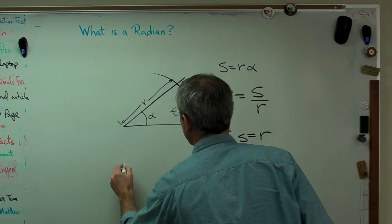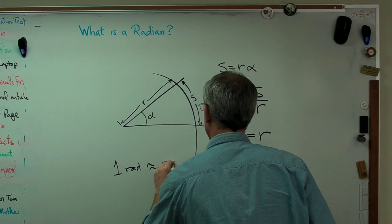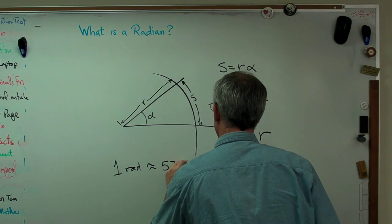If you do some basic trigonometry, you can decide that one radian is approximately 57.3 degrees, I think.